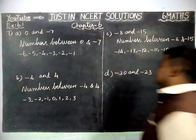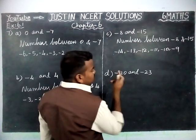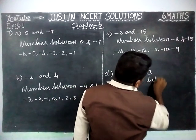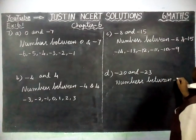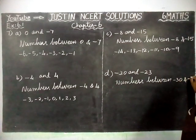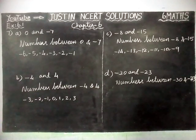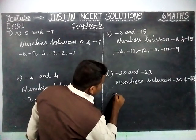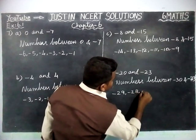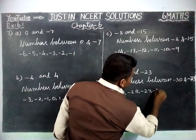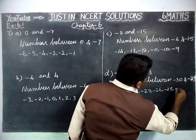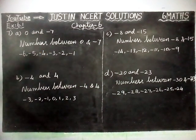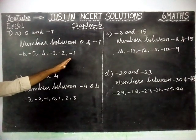Next, part D. Here, the smallest number is minus 30 and the greatest number is minus 23. Numbers between minus 30 and minus 23: minus 29, minus 28, minus 27, minus 26, minus 25, and minus 24. These are the numbers in between, from smallest number to highest number, because they asked us to write it in increasing order.